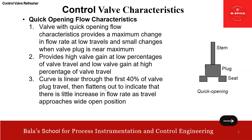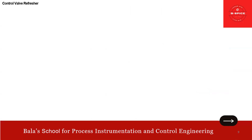Another important point: the curve is linear throughout the first 40% of the plug travel, then flattens out to indicate there is only a little increase in flow rate as travel approaches wide open. So first 40% is linear, then after that it flattens out. You can see some similarity with linear characteristics – we'll discuss that in the applications. For sensitivity: it is decreasing sensitivity in quick opening.